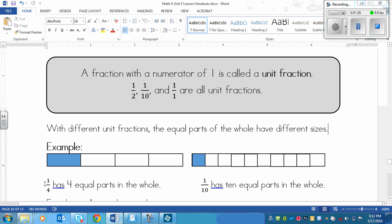So we can say that one quarter has four equal parts in the whole. 1, 2, 3, 4.